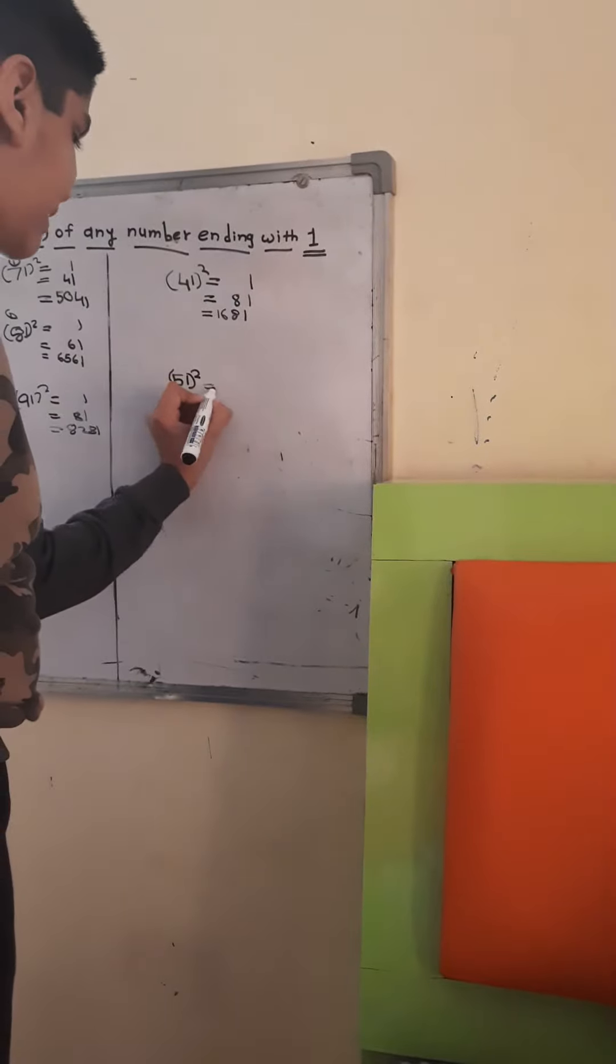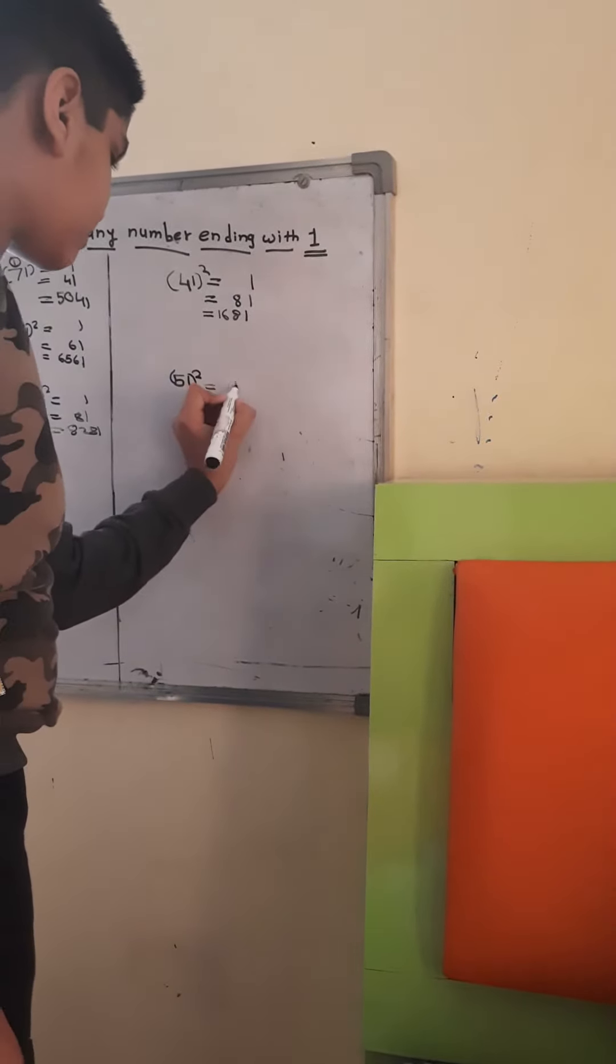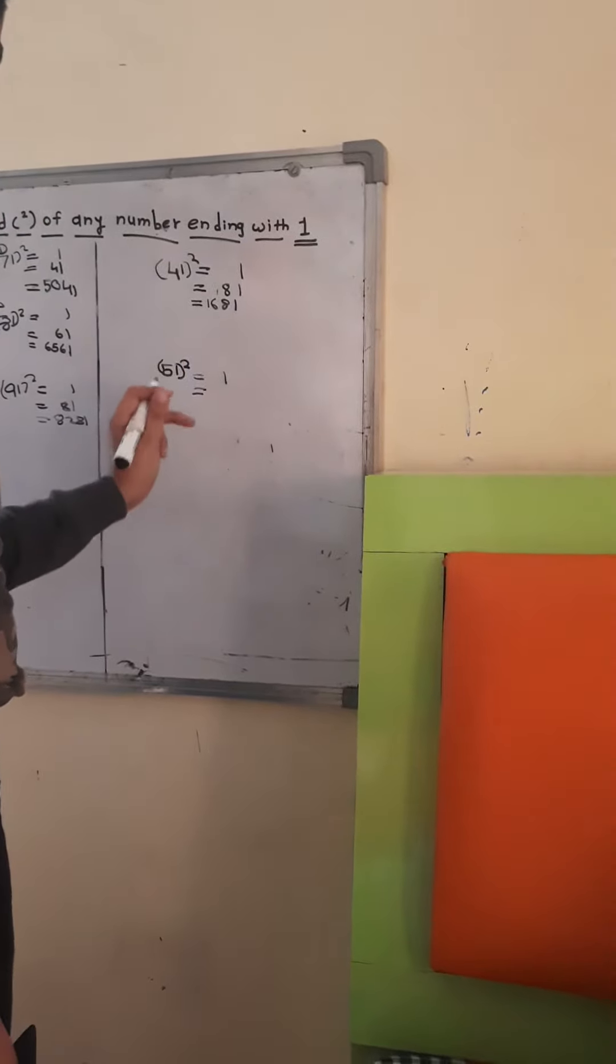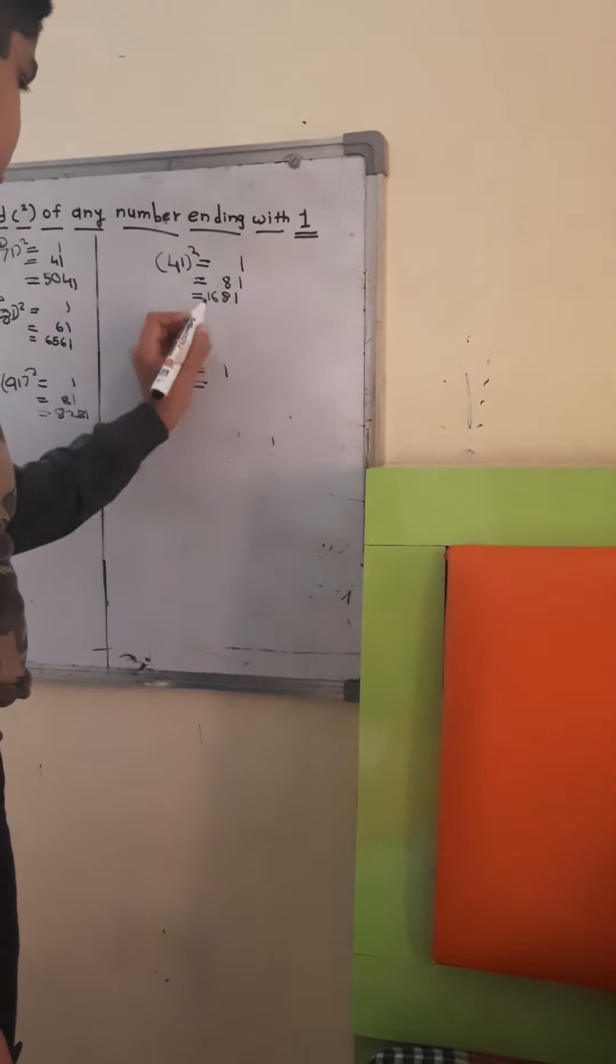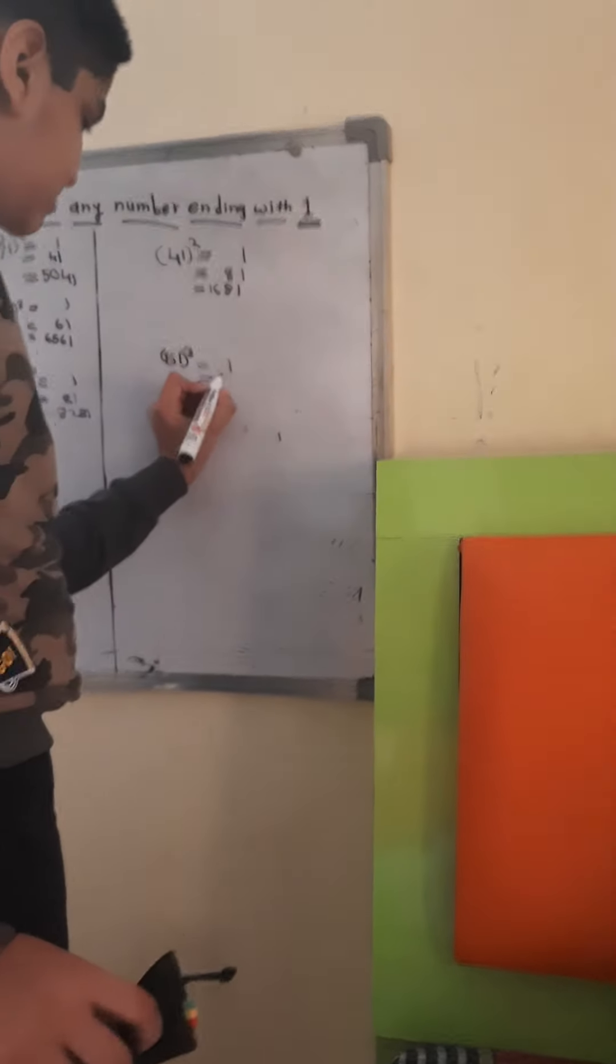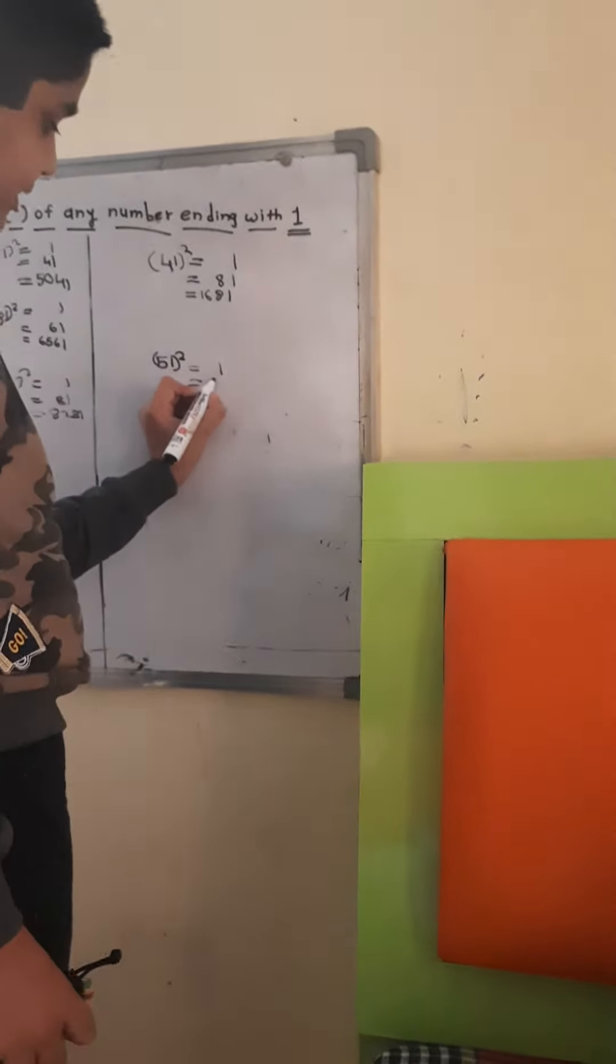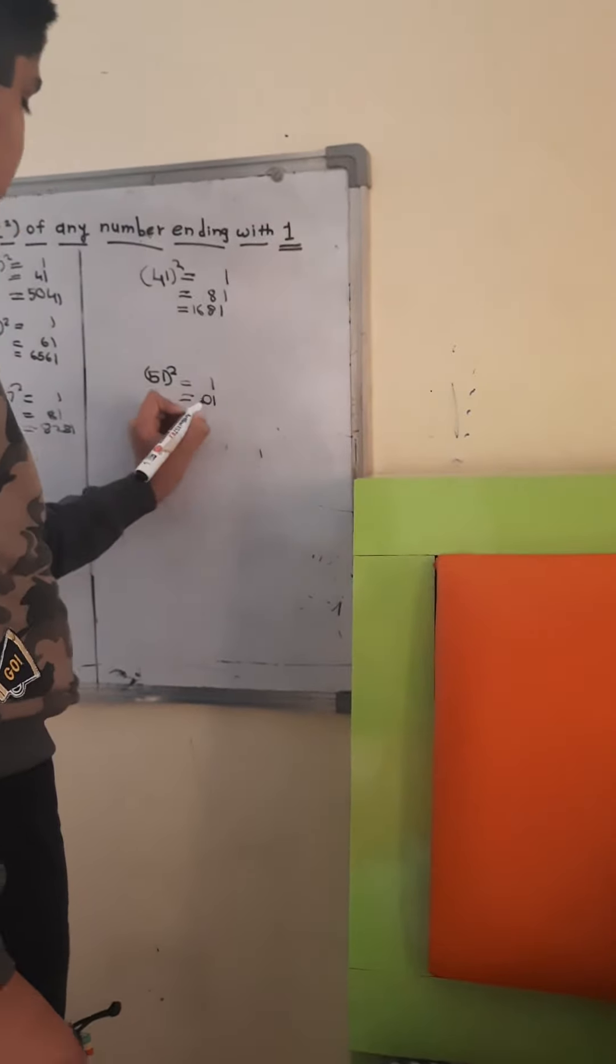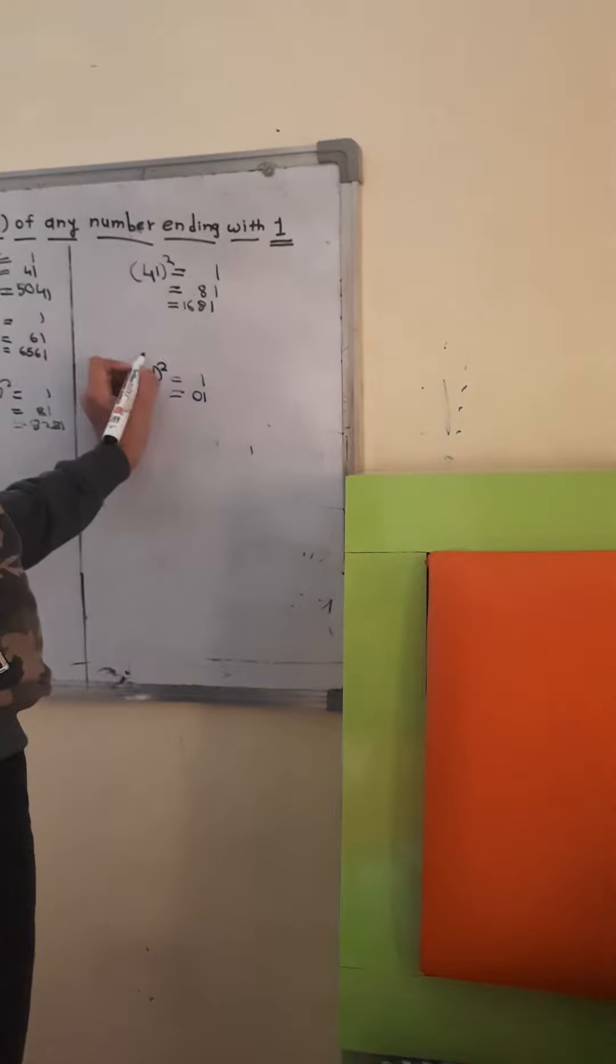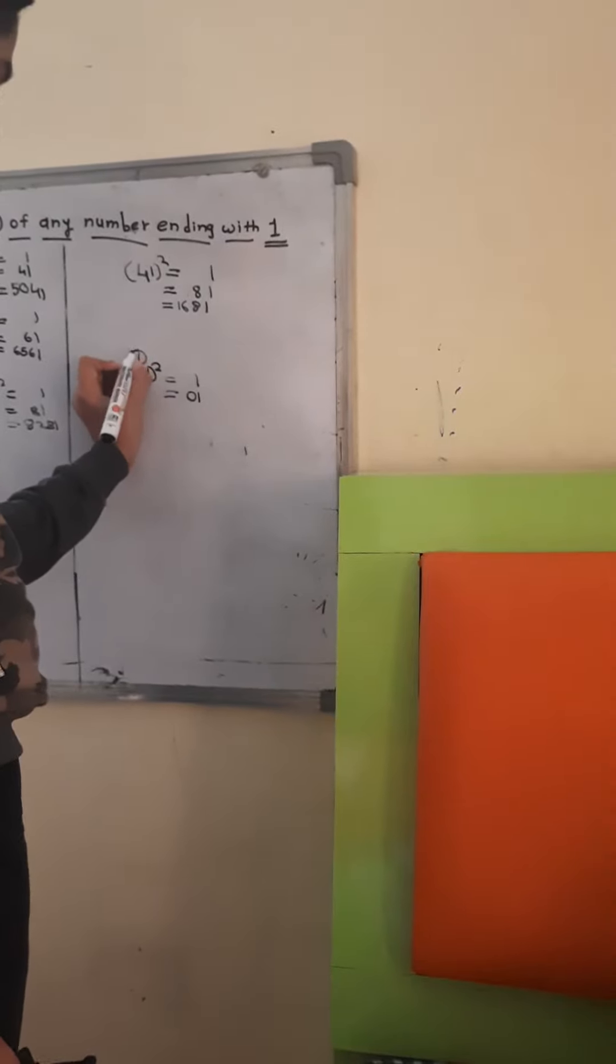Now, when we write 1 here, then we have to write 8 here, no not 8, 5 double, which is 10. So, we don't have to write 10 here. We have to just write 0, 1, and carry the 10, 10's 1 up here, as a carryover.